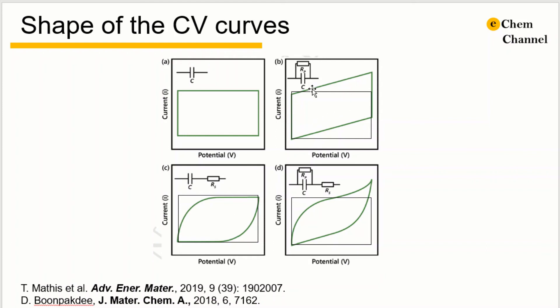When there is a presence of a series resistor, the area is smaller than the ideal CV. So this indicates that the practical capacitance is actually smaller than the idealized case.